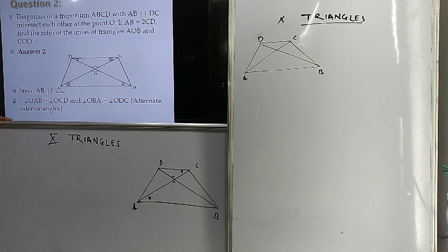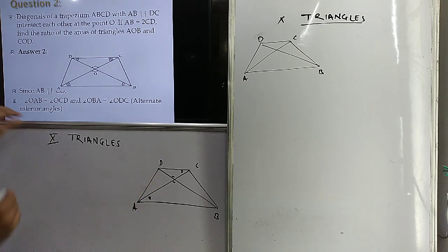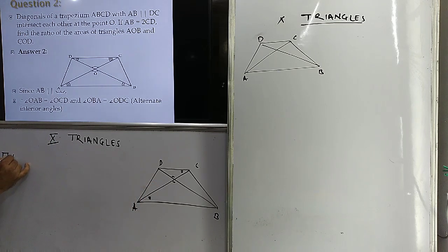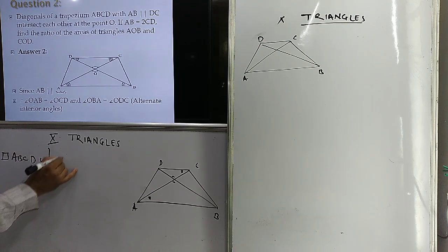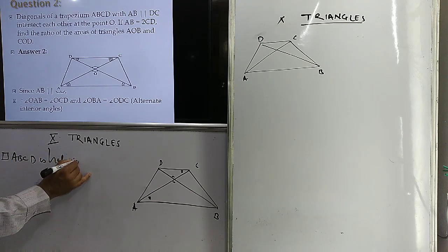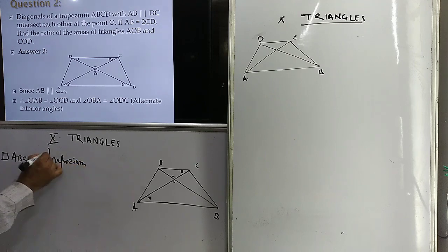What is given? ABCD is a trapezium. A trapezium means one pair of opposite sides is parallel. Which sides are parallel? AB is parallel to CD. That is what is given.